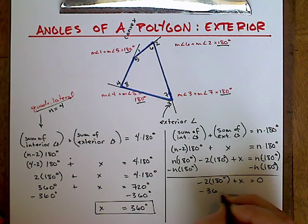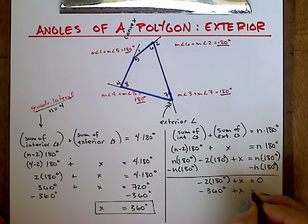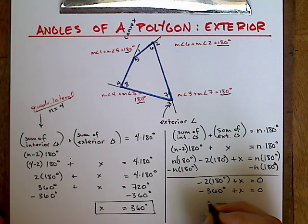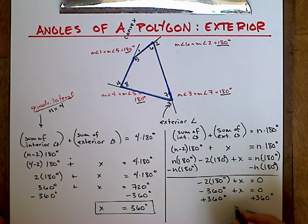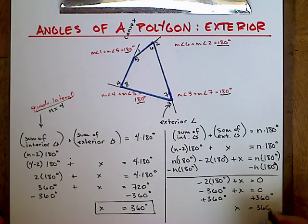And then if we evaluate that, we get negative 360 plus x equals zero. And then we're going to bring the negative 360 to the other side by adding it to both sides. And we see that x also equals 360 here. And the n actually disappears.